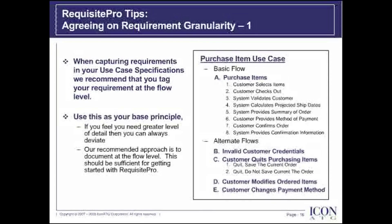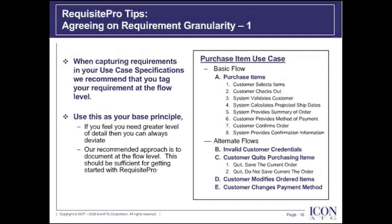Agreeing on requirement granularity. When capturing requirements in your use case specifications, we recommend that you tag your requirements at the flow level. The major flows are: purchase items, invalid customer credentials, customer quits purchasing items, customer modifies ordered items, and customer changes payment method. Each one of these flows will be tagged as individual requirements. However, in flow A — purchase items — steps one through eight would not be tagged as individual requirements; rather, they would be contained within the requirement 'purchase items.' Start with our recommendation as your basic principle, and if you need more detail, you can always deviate — but be wary. The more you have, the more you need to track and maintain. I usually like to work backwards and see how quality assurance would conduct system or functional testing. If their testing is more flow-based, then this level of tagging will suffice.